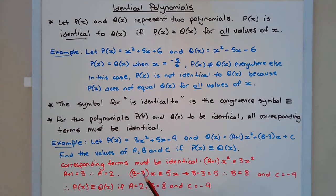Now B minus three in brackets times X is identical to five X, which implies that B minus three equals five and therefore B equals eight. And C of course, which represents the constant term is equal to negative nine. Therefore, P of X is identical to Q of X if A equals two, B equals eight, and C equals negative nine.